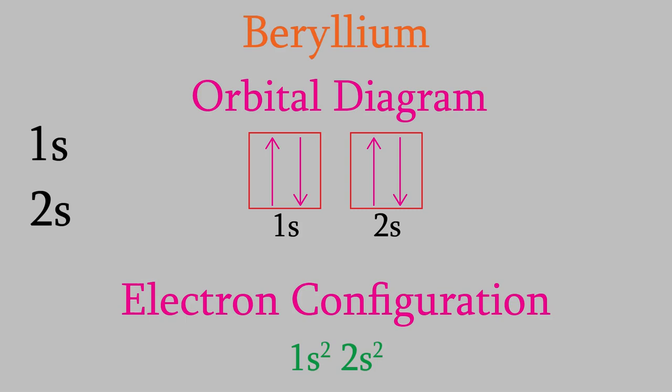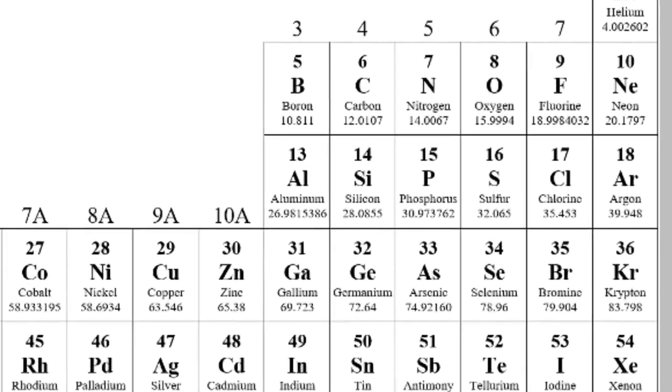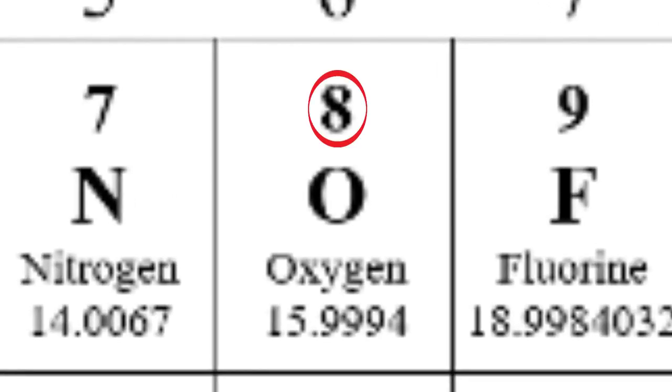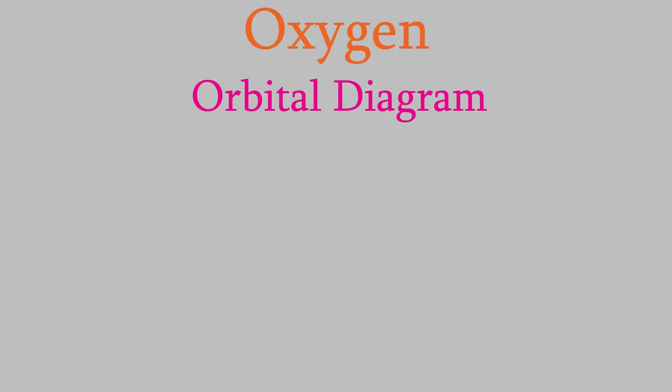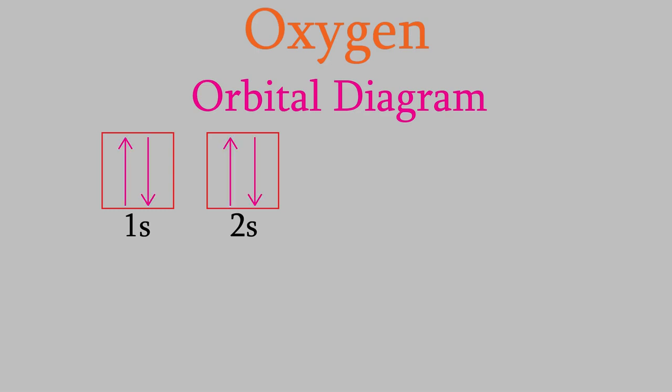Now let's write the electron configuration for beryllium: it's 1s², 2s². So far we've looked at atoms that only have electrons in s orbitals. The orbital diagrams look a bit different when we have other kinds of orbitals. Let's try the orbital diagram of an oxygen atom. Oxygen has eight electrons. From the work we did with beryllium, we know the first four will be in 1s and 2s orbitals. But what comes next? The electrons still want the lowest energy, achieved by the lowest values of n and l — and there seem to be two possibilities.